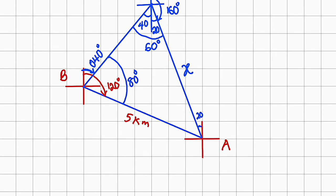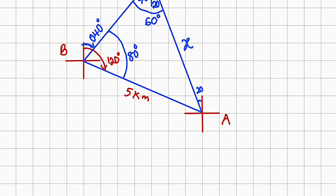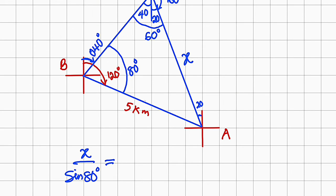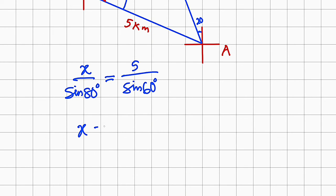So according to sine rule, we can take X divided by sine of 80 degrees. This must be equal to—we relate other sides that are available. We have this side length and this angle, so we can relate them: 5 divided by sine of 60 degrees. By cross multiplication, we have X equal to 5 multiplied by sine of 80 degrees divided by sine of 60 degrees.